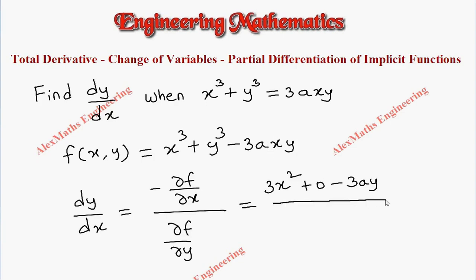Then whole divided by derivative, partial derivative with respect to y in the denominator. First term x cube is purely constant which is 0. And we have y cube which is 3y square and here the constants are minus 3ax and the derivative of y is 1.